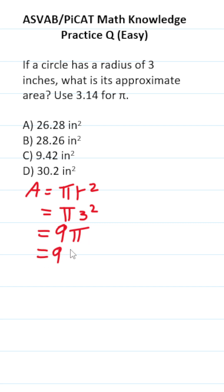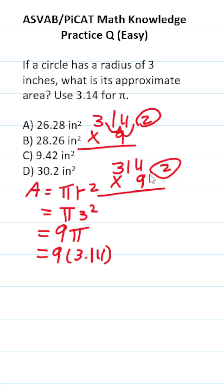We're told to use 3.14 to approximate pi. So this becomes 3.14 times 9. We have to clear this decimal by moving it two places to the right. This becomes 314 times 9, albeit with two decimals to move back into our answer.